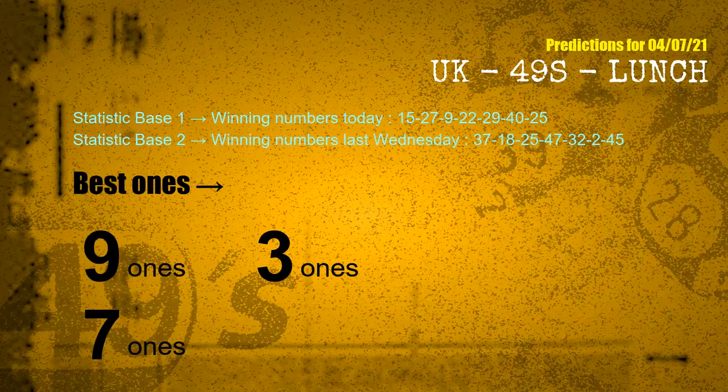According to the statistics above, with winning numbers today 15, 27, 09, 22, 29, 40, 25, and winning numbers last Wednesday 37, 18, 25, 47, 32, 02, 45 — the frequent following units digits are 9-ones, 3-ones, and 7-ones.